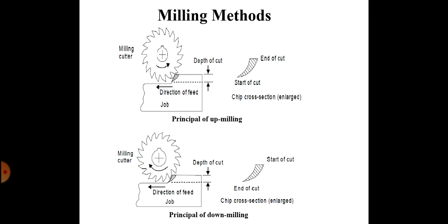The next difference: in up milling, due to more friction, more heat is generated at the contact surface of the cutter and work piece. In down milling, less friction takes place, resulting in less heat generation.